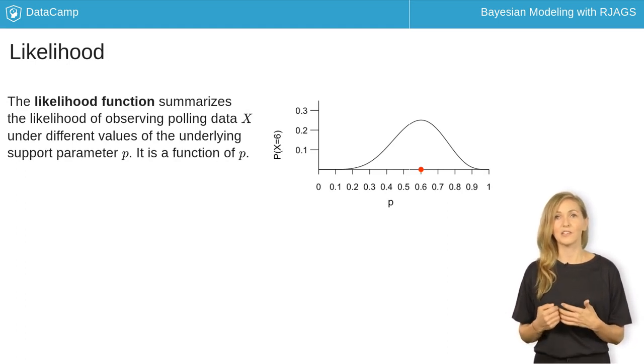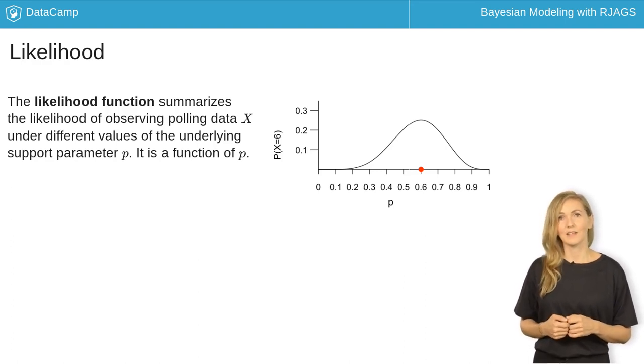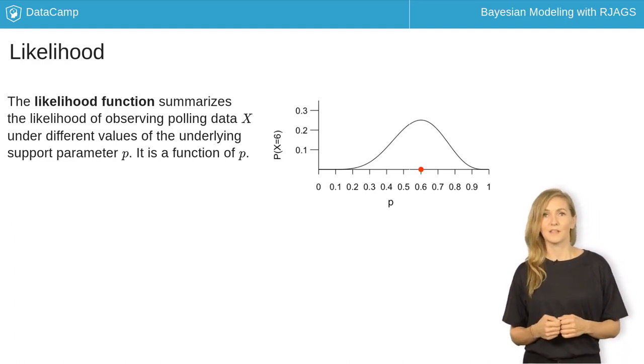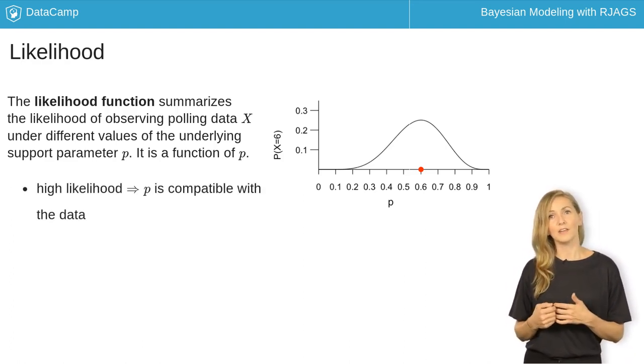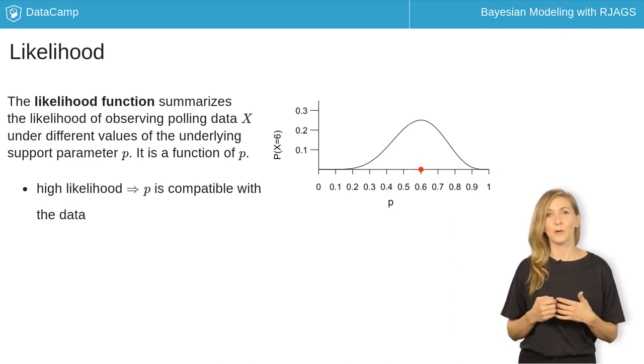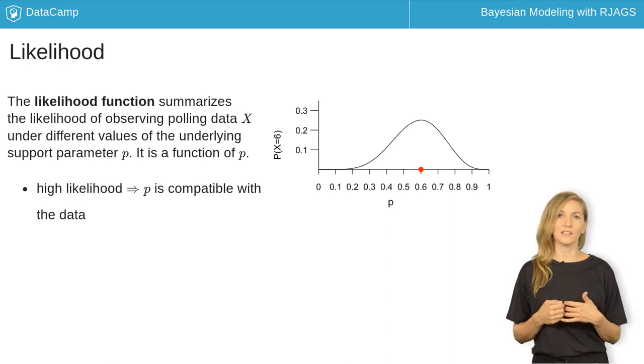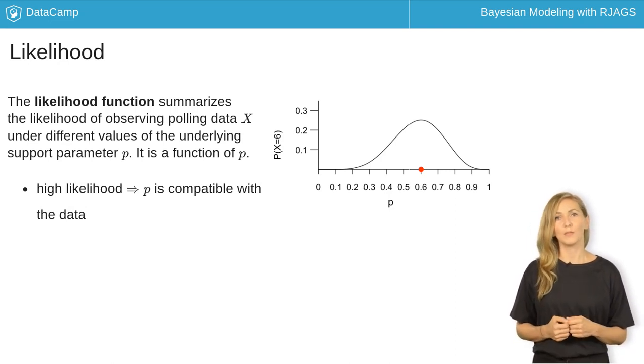Thus, the likelihood is a function of p that depends upon the observed data x. In turn, it provides insight into which parameter values are most compatible with the poll. Here we see that the likelihood function is highest for values of support p between 0.4 and 0.8. Thus, these values are the most compatible with the poll.